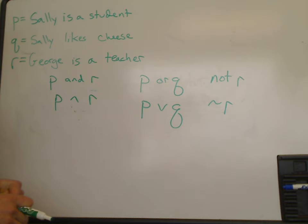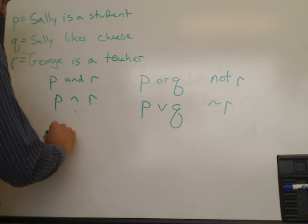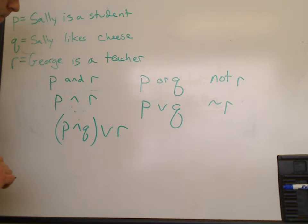In this way we can combine any number of these statements. In fact, we can also use one more operator and it's a parenthesis. So we can say P and Q or R. So this statement means Sally is a student and Sally likes cheese or George is a teacher.